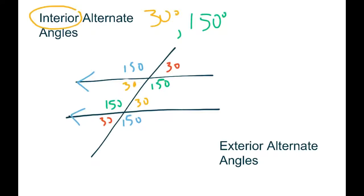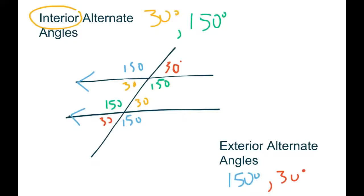For alternate exterior angles, exterior means outside. The two 150s on the outside are alternate exterior angles, and the two 30s on the outside are the other set of alternate exterior angles. To summarize: opposite, corresponding, and alternate angles — whether interior or exterior — are always equal to each other, while supplementary angles add up to 180. All of these rules can basically answer any question we're going to get.